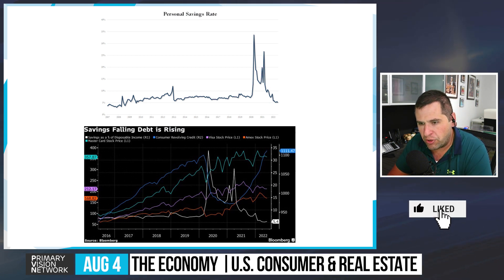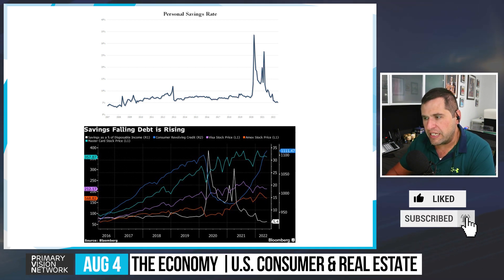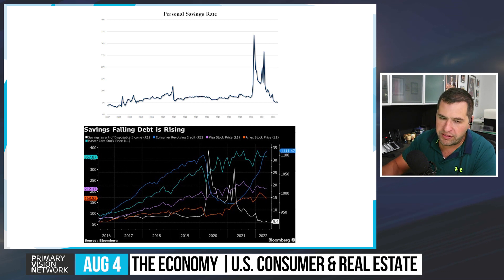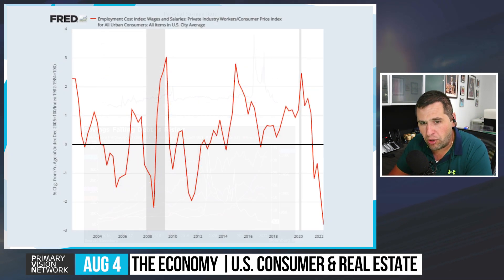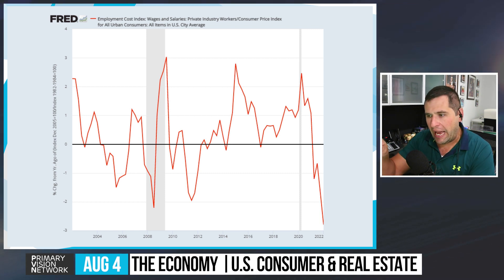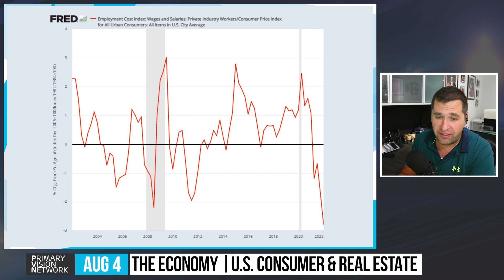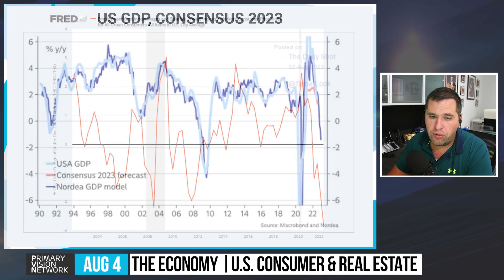Employment costs are up 1.3% quarter-over-quarter in Q2; wages and salaries up 1.4%, benefits up 1.2%. Private sector wages and salaries advanced at the highest pace since 1982, which keeps underlying company costs elevated. That battle for talent will slow but isn't rolling over completely. Personal savings rate is back down to 5.1%, and as savings fall, debt is rising — key pressure points feeding into the broader economic deterioration.